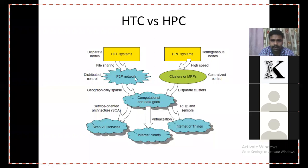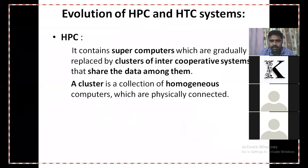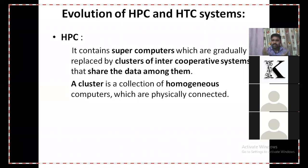High performance computing forms clusters of supercomputers. High throughput computing forms peer-to-peer networks where systems share files or applications. These two things combined give us computational data grids, which have properties from both high performance computing and high throughput computing. From this, mainly three broad categories come into picture: service-oriented architecture, virtualization, and RFID — radio frequency identification and sensors. We will discuss all these in the next slides. Supercomputers are replaced with clusters of intercooperative systems that share data among themselves. All these clusters have homogeneous computers and are physically connected in a centralized location.